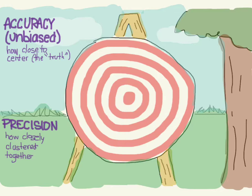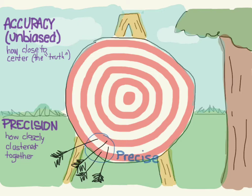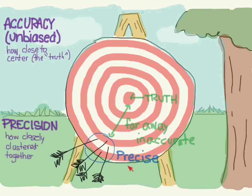Let's try again — we'll shoot four more arrows. You can see now these are still tightly clustered together, so it has good precision. However, this one is far away from the truth, so it's inaccurate. So we have something that is precise but inaccurate.